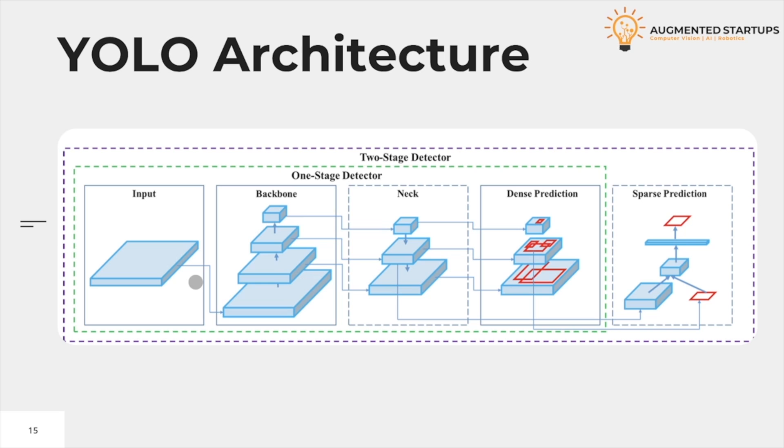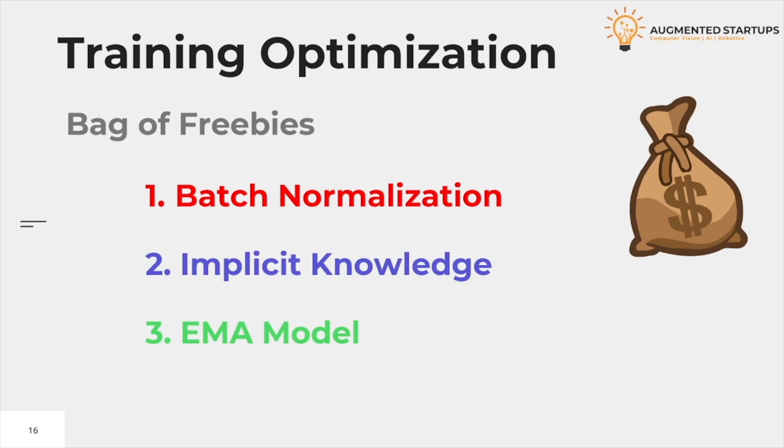Let's dive deeper into the topics and technical words that I told you before. The first term is bag of freebies. Bag of freebies refers to increasing the model accuracy by making improvements without actually increasing the training cost. The older versions of YOLOv4 also use the bag of freebies models. In this session, we'll learn some of the trainable bag of freebies used for this particular paper.